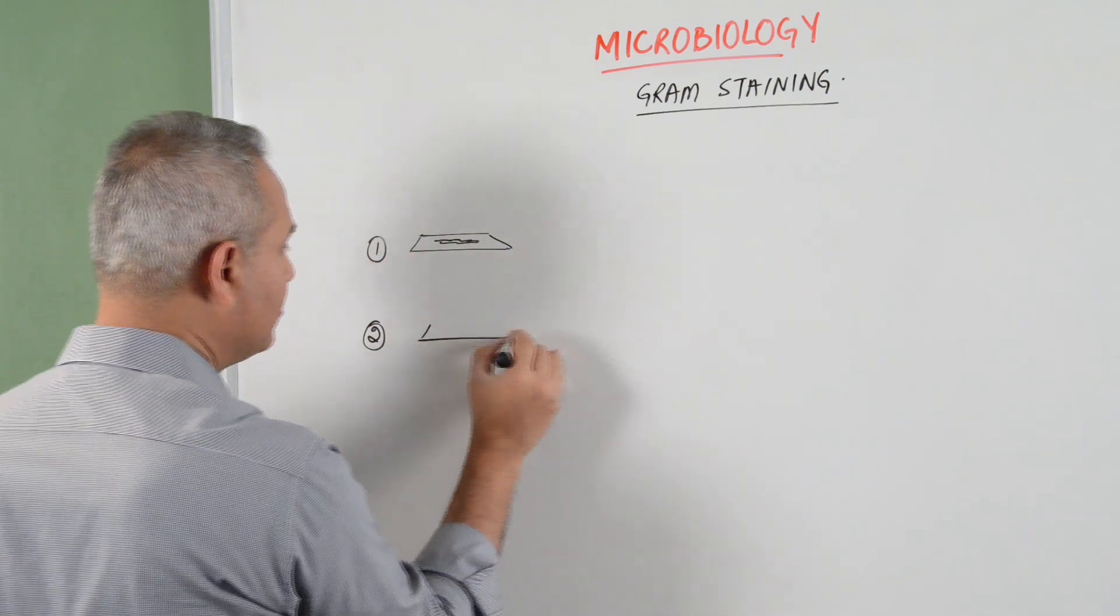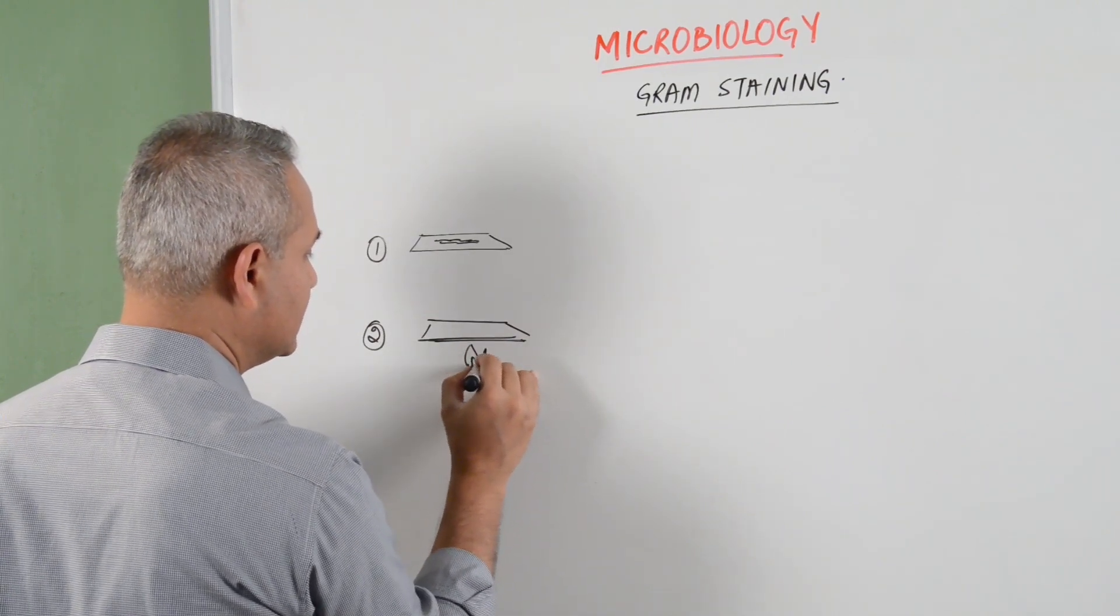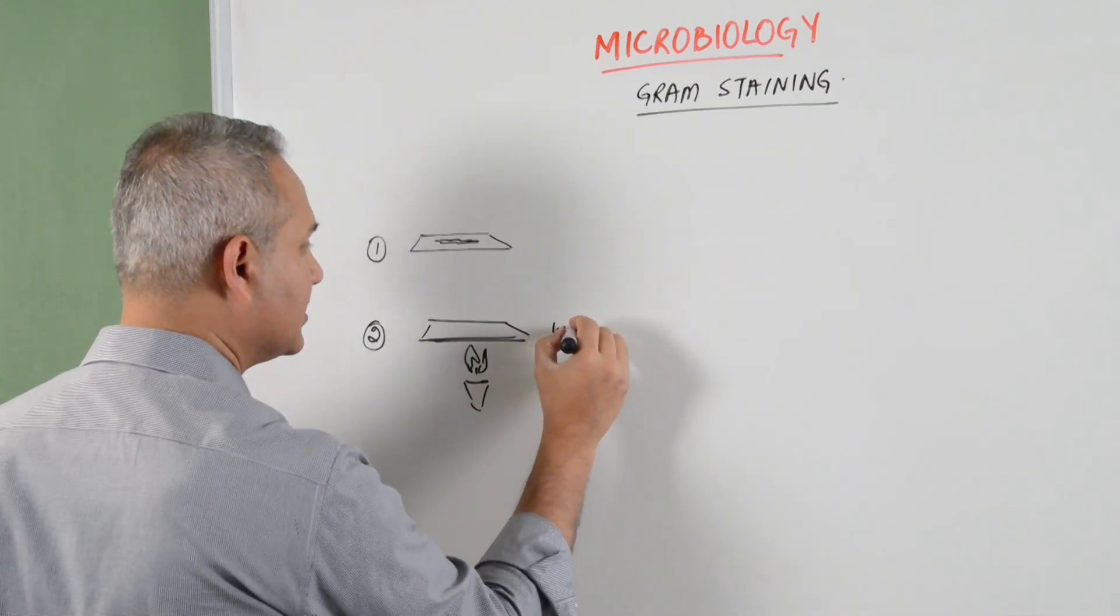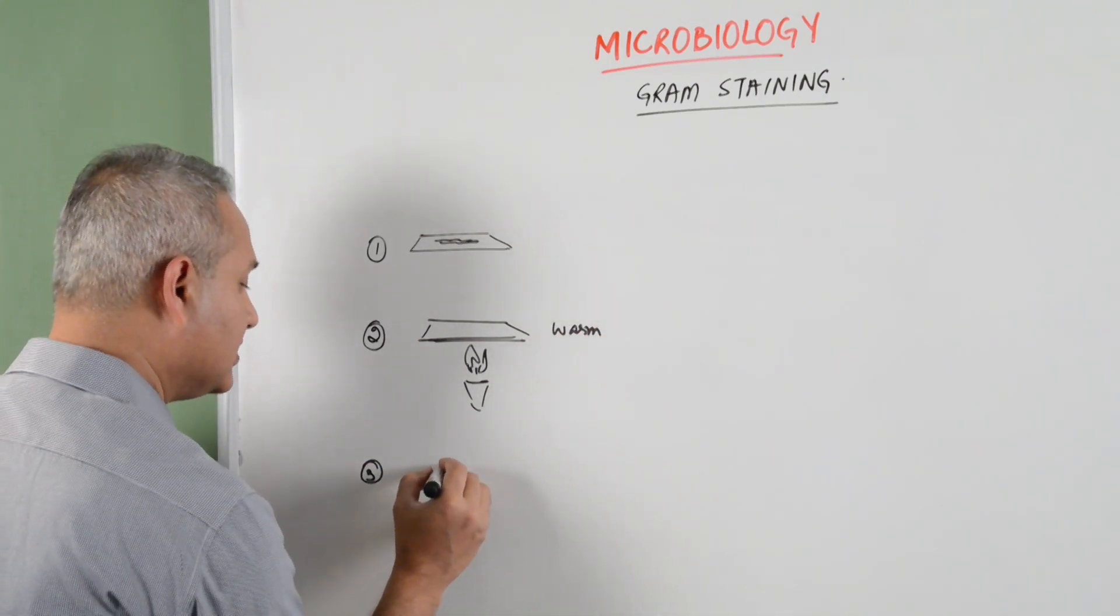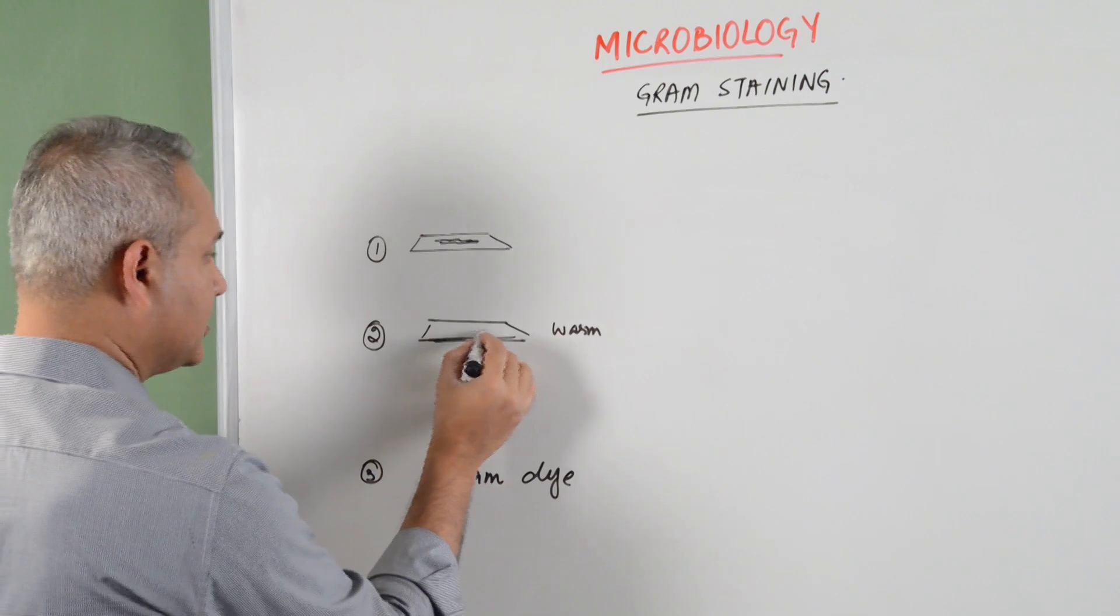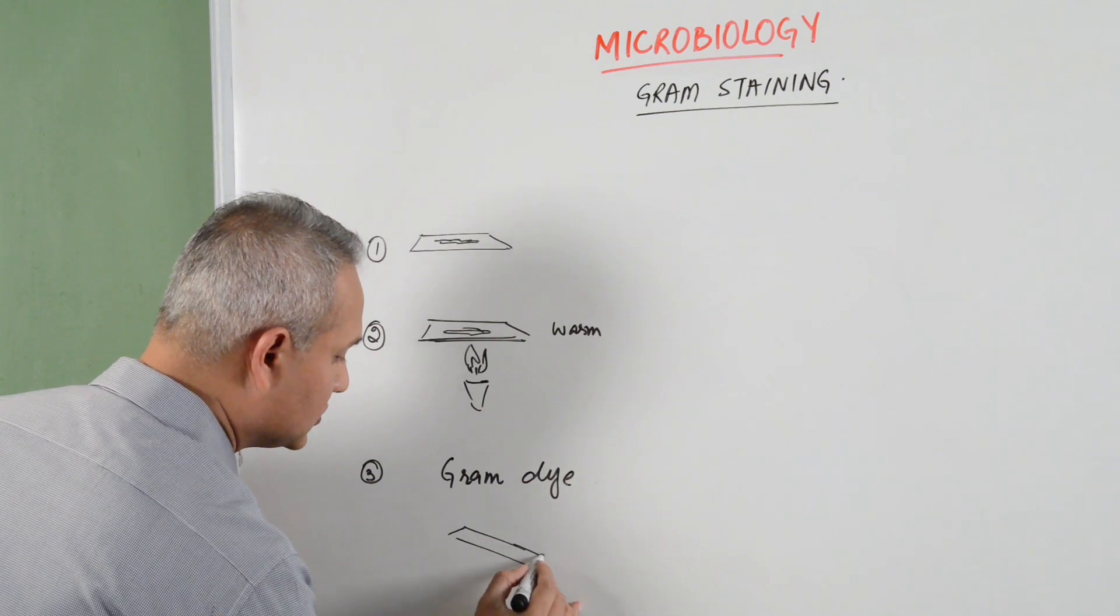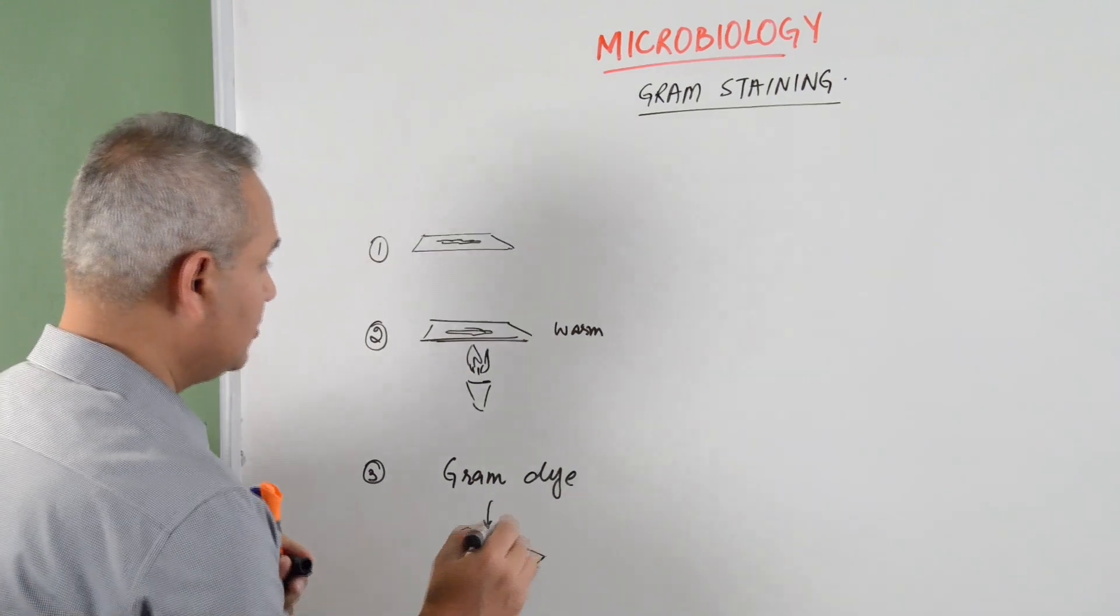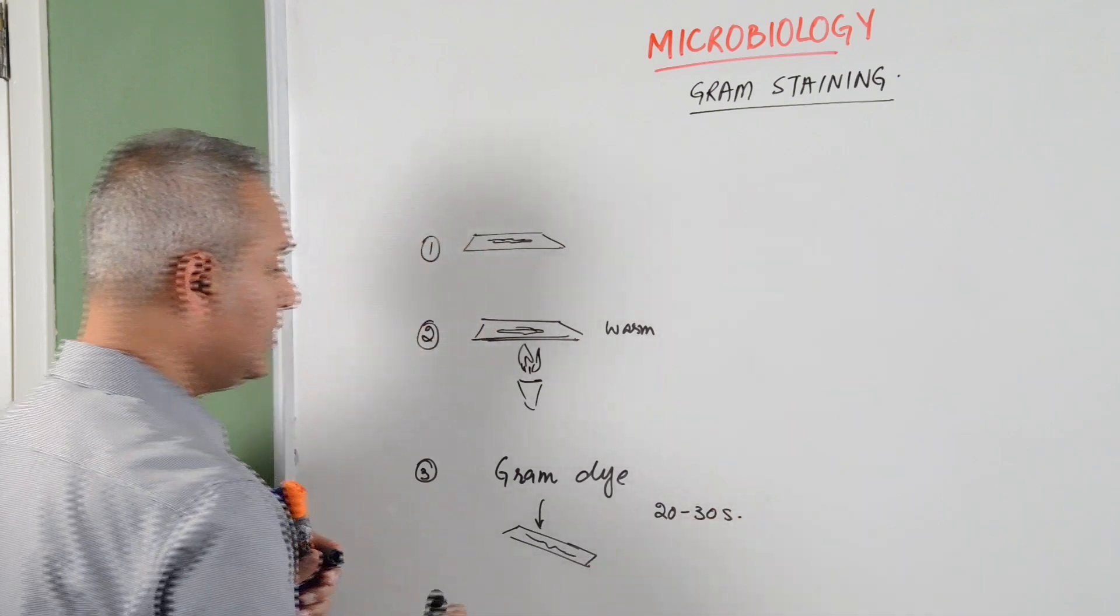Second step is you will warm the plate so that you can fixate the bacteria underneath. Third is that you add the Gram stain on it. Gram dye is put on it. So let's say this was a bacteria, so here you put the slide like this and you pour the Gram dye. Now about 20 to 30, so this would take 20 to 30 seconds.